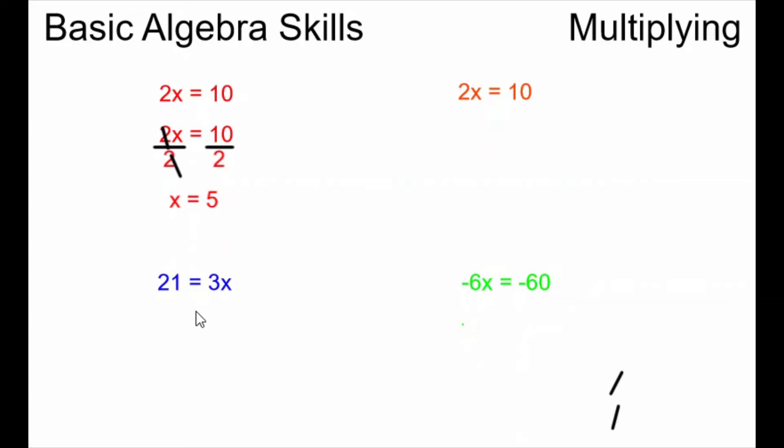This second example on the bottom left we have 21 equals 3x. It's a very similar example except this time my term including x is on the right side of the equals. But the process is the same. I want my variable to be alone. Since it's being multiplied by a 3 I do the opposite and I divide both sides of the equation by 3.